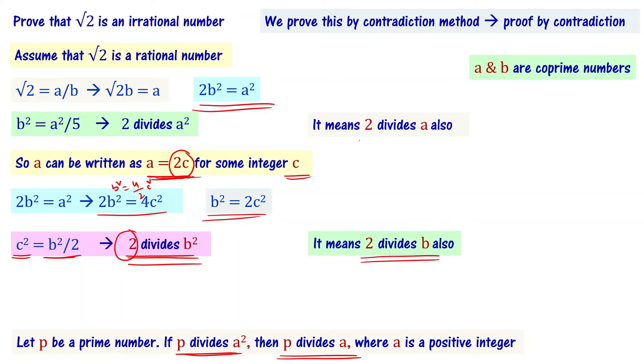Look at this: 2 divides A, and 2 divides B. So 2 divides both A and B.